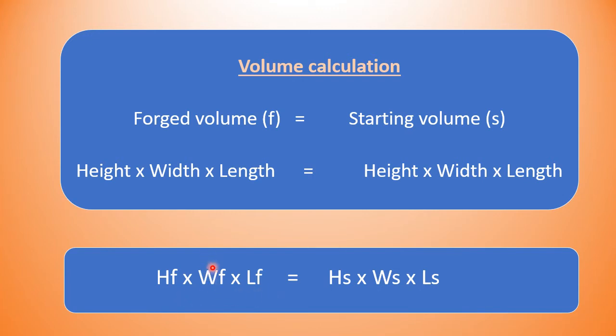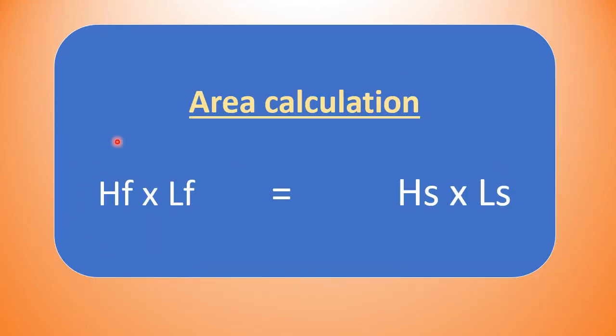Since the starting and ending widths of our scroll are the same and will cancel each other out, since they are set equal to each other, we can eliminate them now. This creates an area calculation leaving only four variables in our equation.